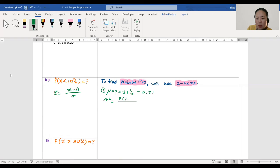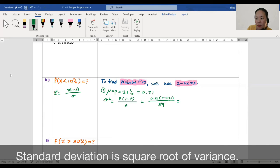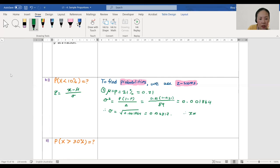First, mu is p, which is 21%, or 0.21. What else do we need? The variance: p times q, which is 1 minus p, over n. So 0.21 times 1 minus 0.21, over 89. Put that in your calculator; you'll get something like 0.001864. Therefore, sigma is the square root of 0.001864, and then you'll get 0.04317.